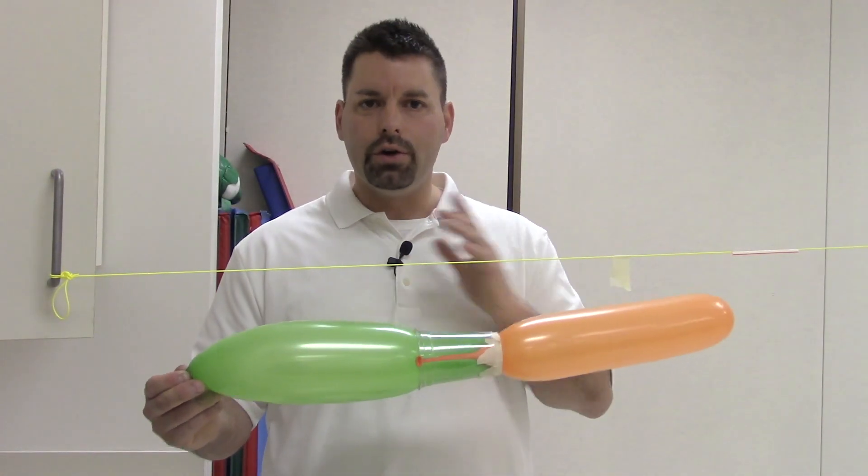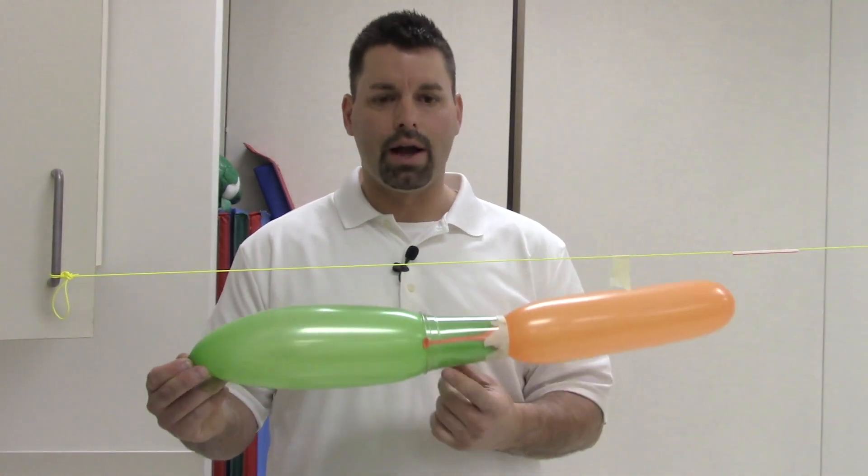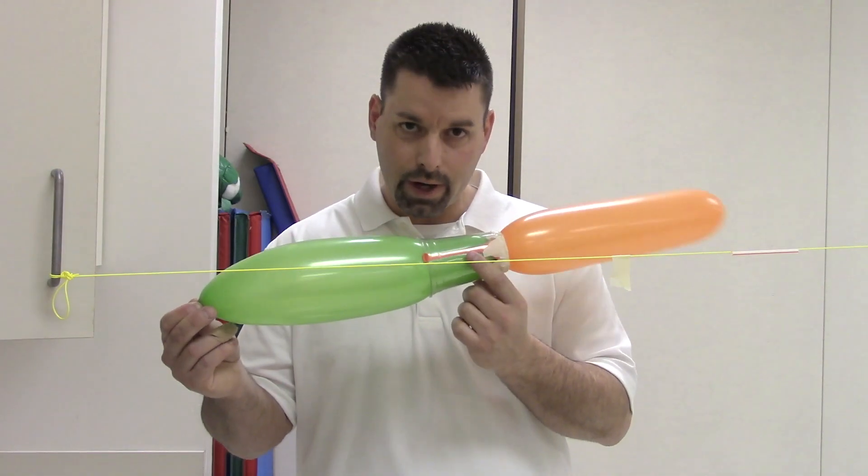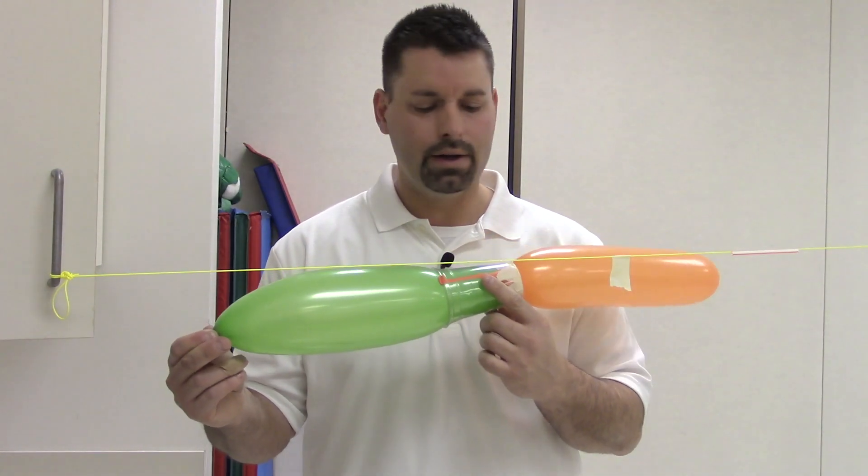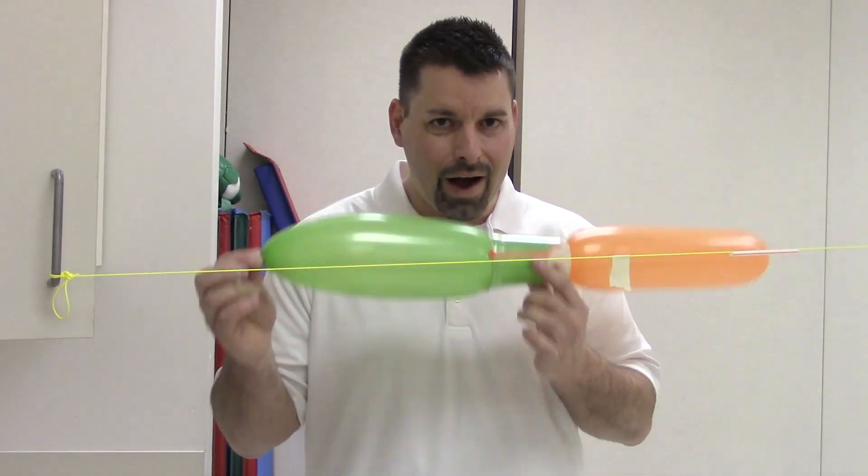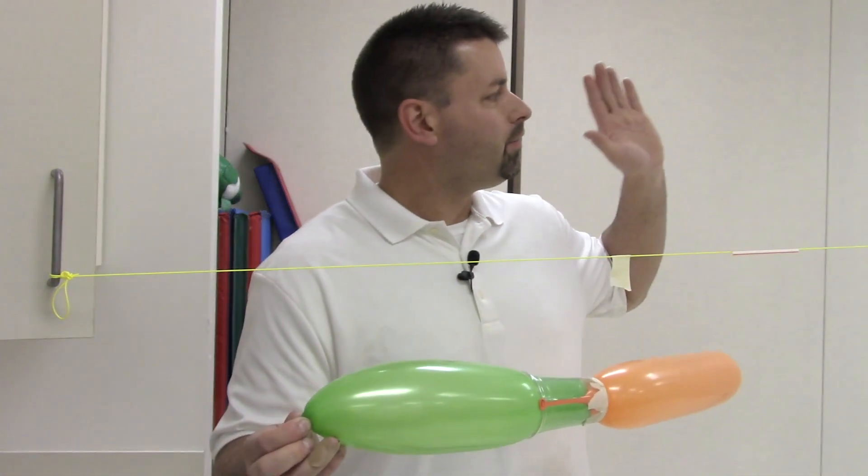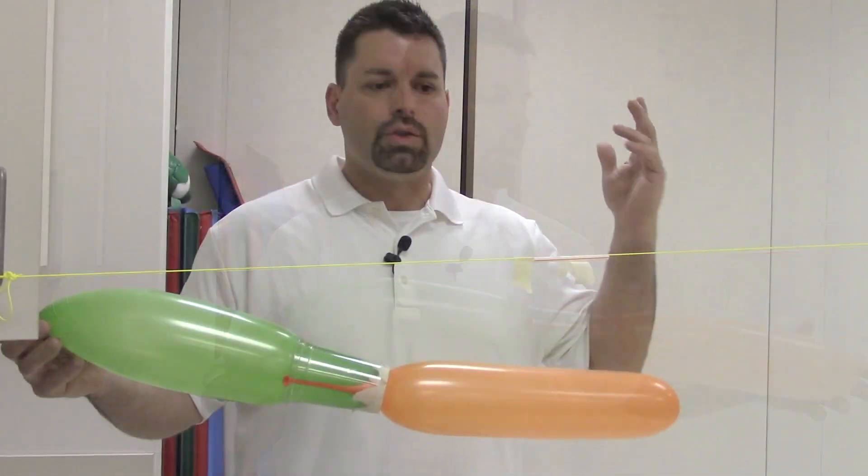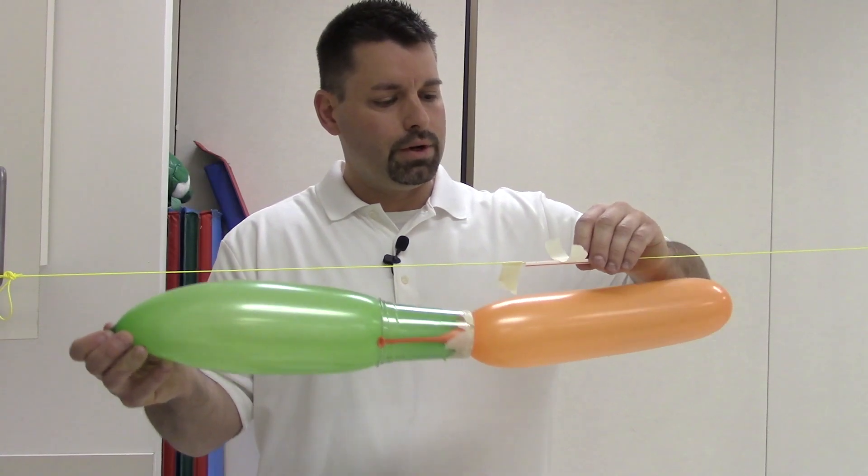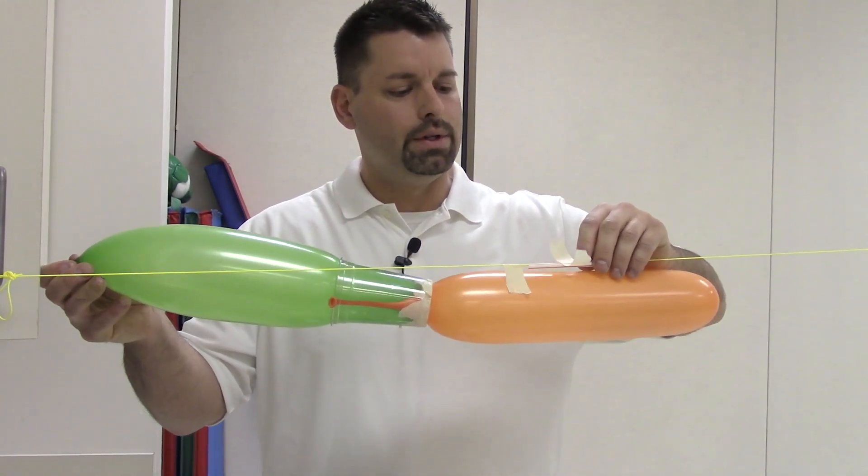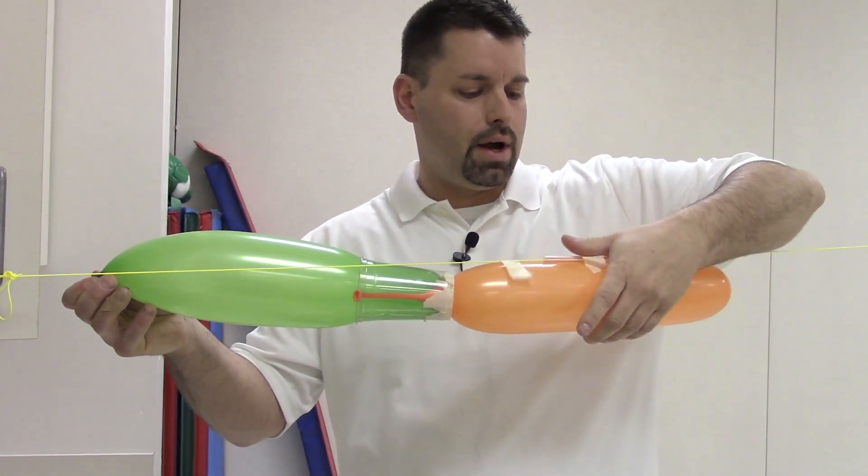So in other videos we showed you how to make a two-stage rocket. We decided to go with our clear cup for our two-stage rocket design and we're going to see if we can get our two-stage rocket to fly further down our fishing line. So we're going to attach our rocket to our straw the same way we did with our single-stage rocket.